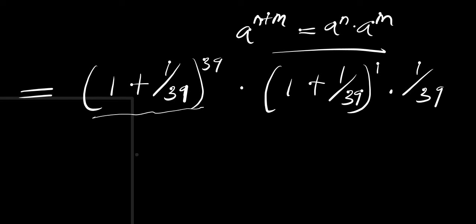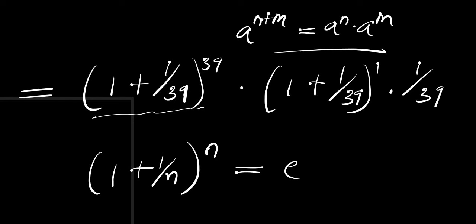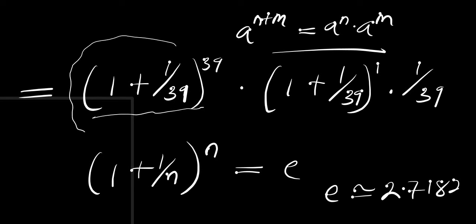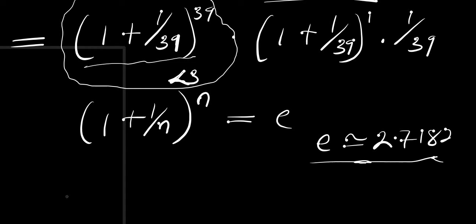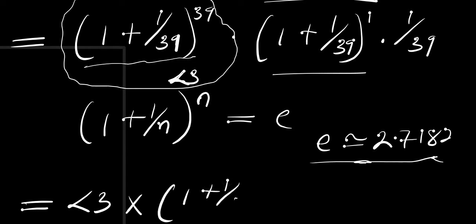This expression is in the form of (1 + 1/n) raised to the power of n, which is Euler's number e, and the value of e is approximately 2.7182. Since e is less than 3, we are going to replace that part with a number that is less than 3. So we will have a value less than 3 times (1 + 1/39) times 1 divided by 39.